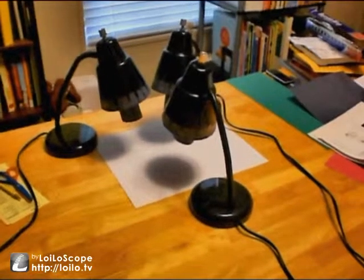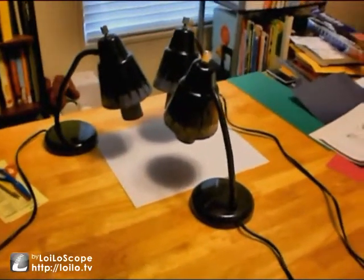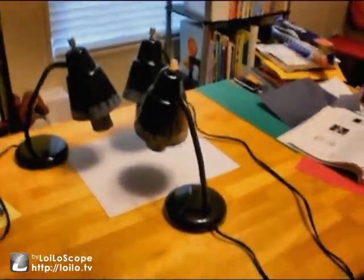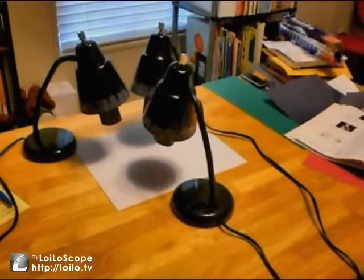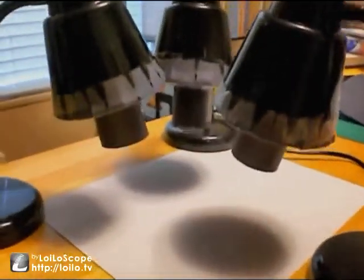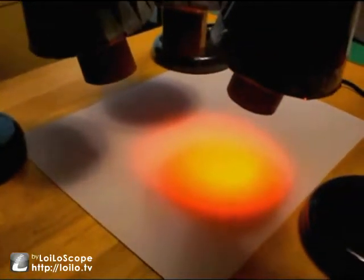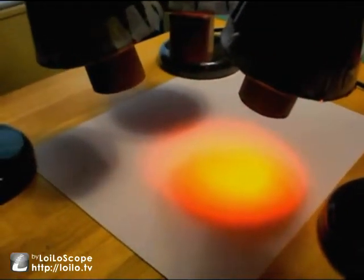This is my demonstration of how additive primary colors of light blend together to make all the different colors in the light spectrum and ultimately white light. For my setup, I've got three lights, each one has a different color light bulb in it. You can see there's red. The other two are blue and green.